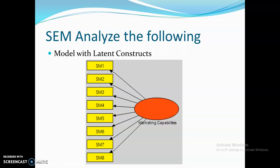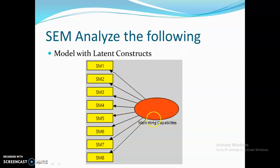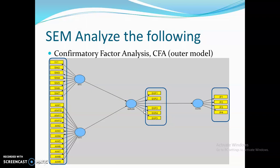For example, marketing capabilities is a latent construct, and SM1 through SM8 are the indicators that represent this latent construct. In research, we cannot directly measure marketing capabilities, so the researcher will measure these eight indicators, which overall represent the latent construct of marketing capabilities.